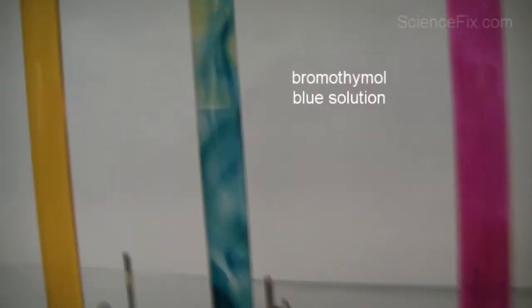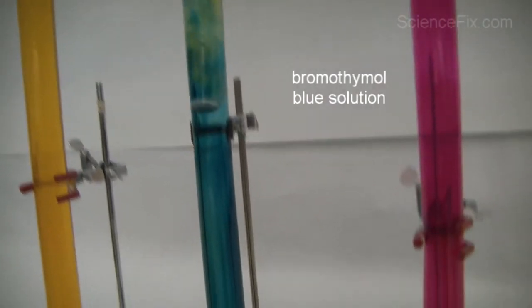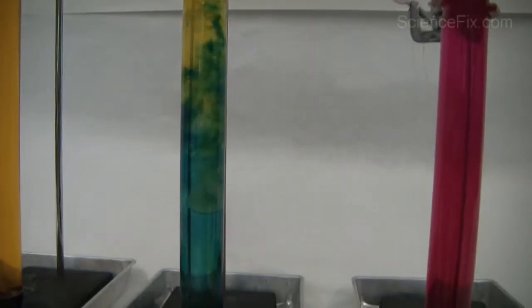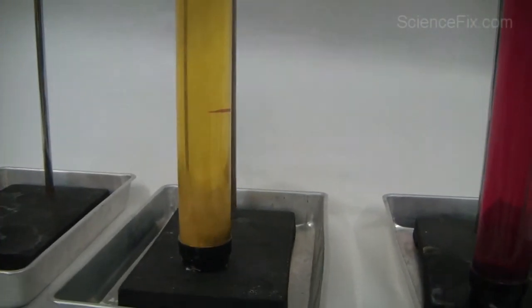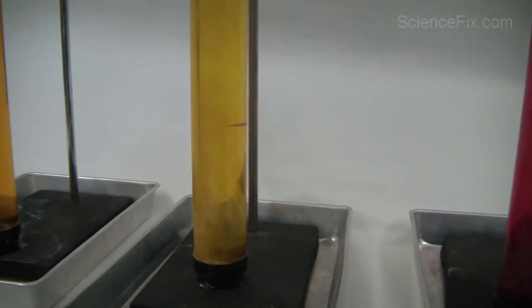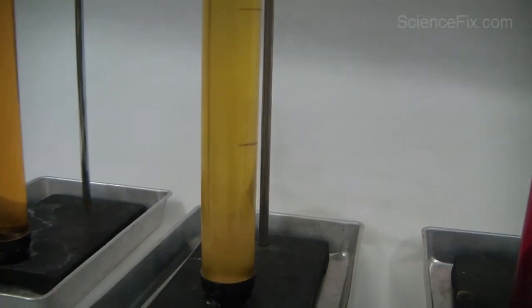In this tube is bromothymol blue solution. When the Alka-Seltzer tablet reacts with the water in this tube, the carbon dioxide gas is created, and the tube's color changes to a yellowish color.